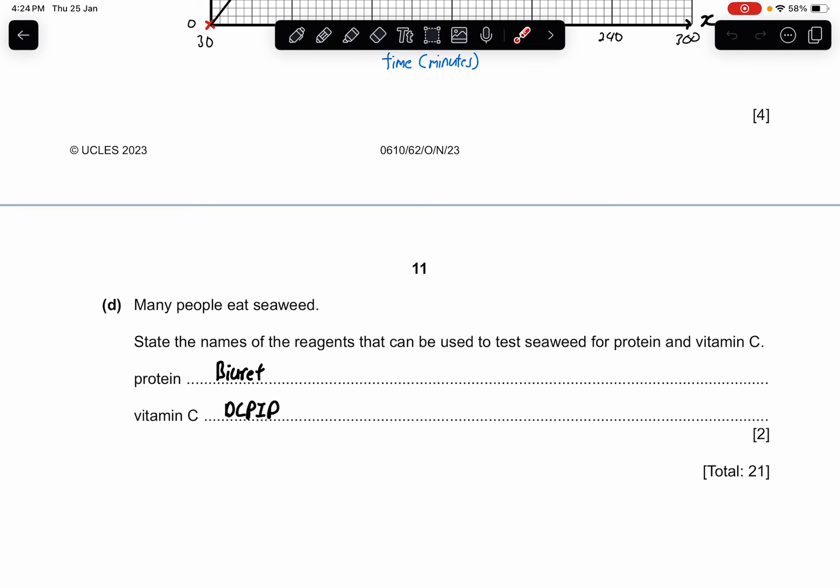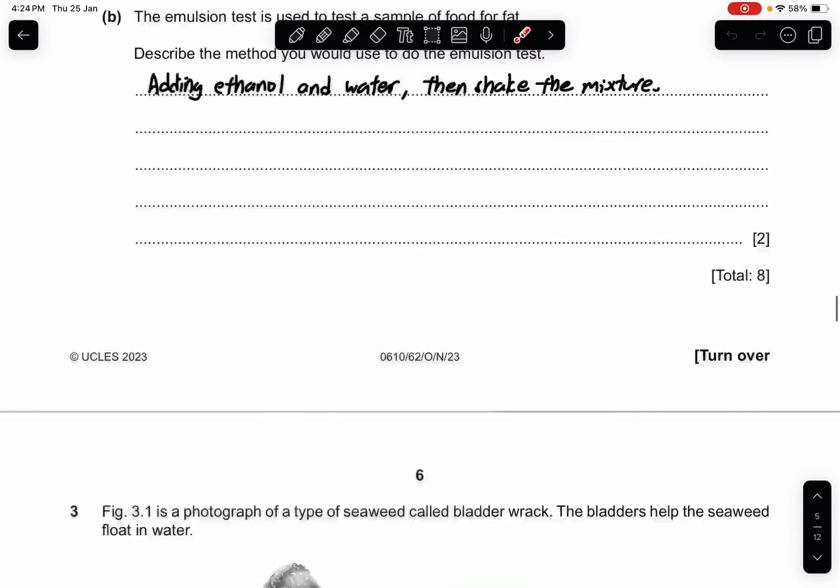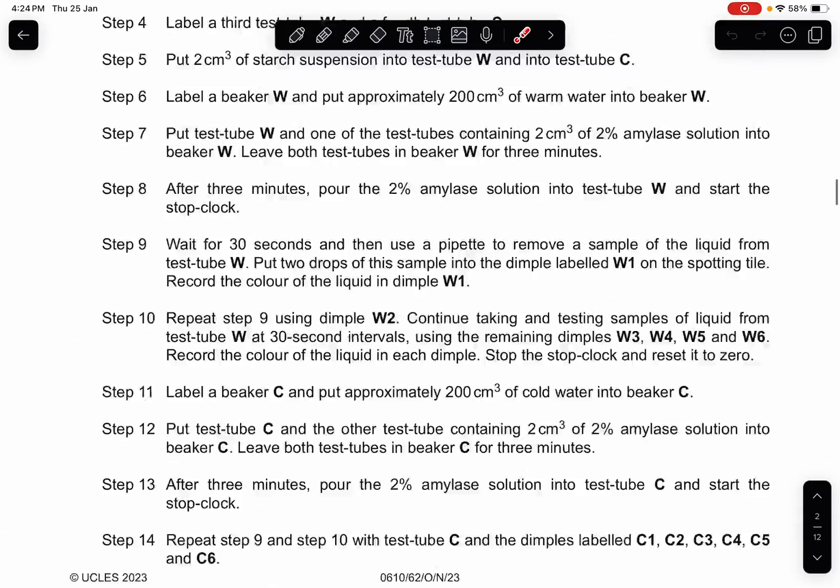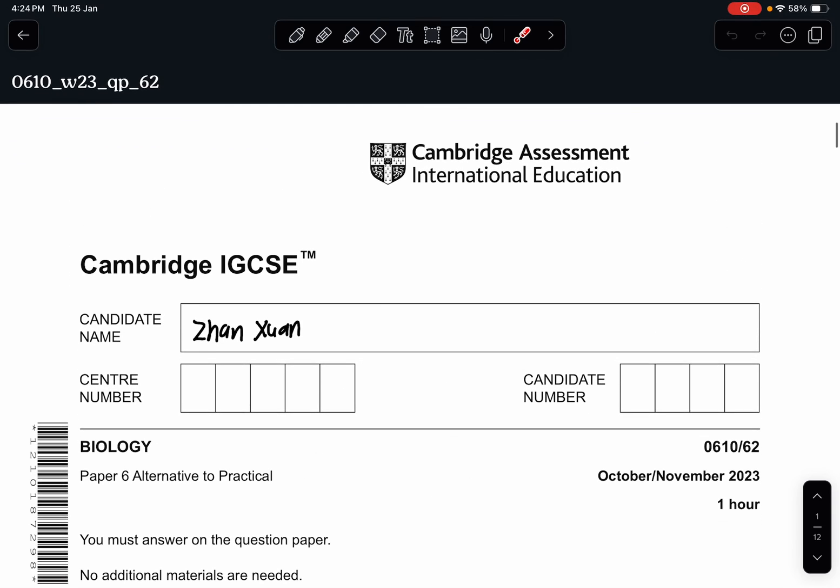Last question. Many people eat seaweed. State the name of the reagent that can be used to test seaweed for protein and vitamin C. Very simple. So the protein will be from biuret solution and vitamin C is from DCPIP. So that is the end of the paper. Thank you so much for watching and see you guys in the next video. Bye-bye.